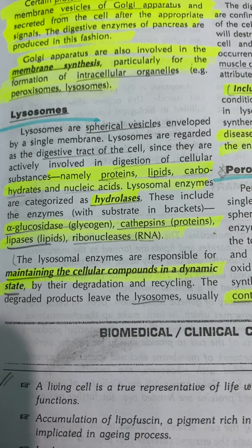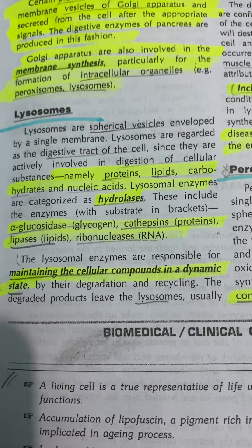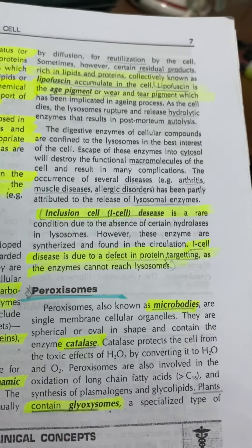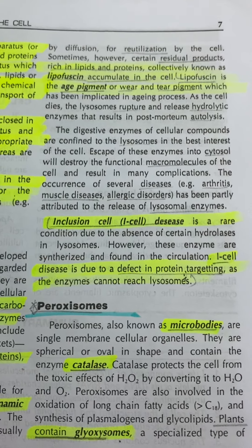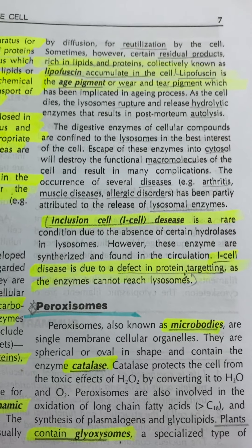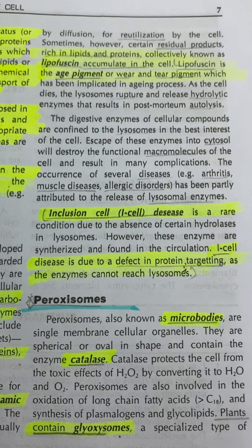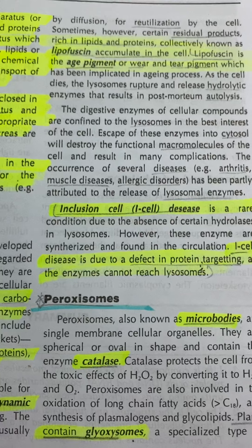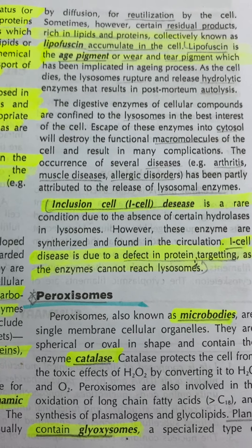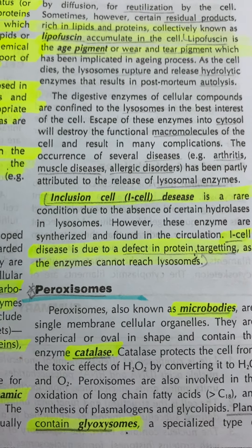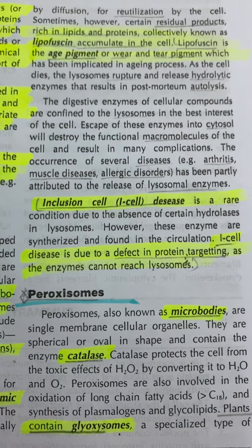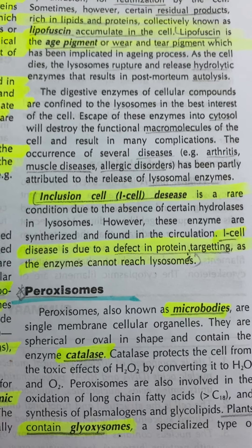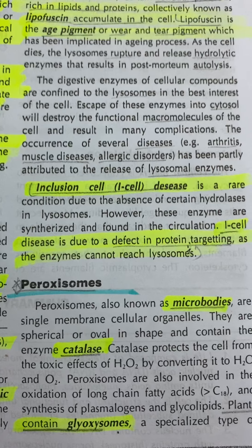Lysosome enzymes are responsible for maintaining cellular compounds in a dynamic state through degradation and recycling. The degraded products leave the lysosome usually by diffusion for reutilization by the cell. Sometimes, however, certain residual products rich in lipids and proteins — collectively known as lipofuscin — accumulate in the cell. Lipofuscin is an age pigment, a wear-and-tear pigment, which has been implicated in the aging process.